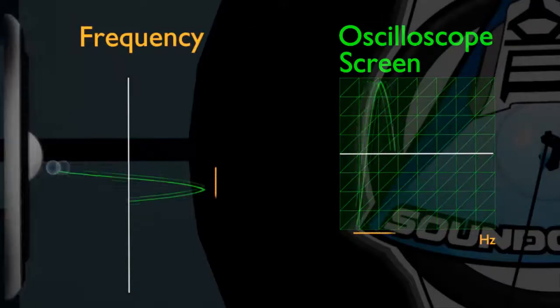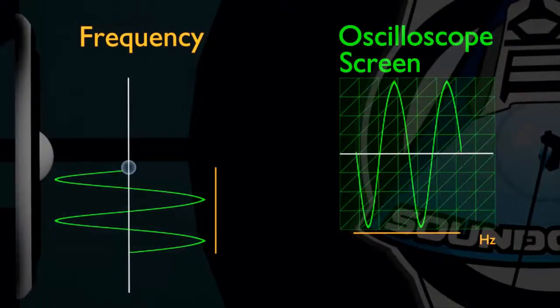Fourth, the number of oscillations of a molecule in one second is called frequency, and it is measured in hertz.